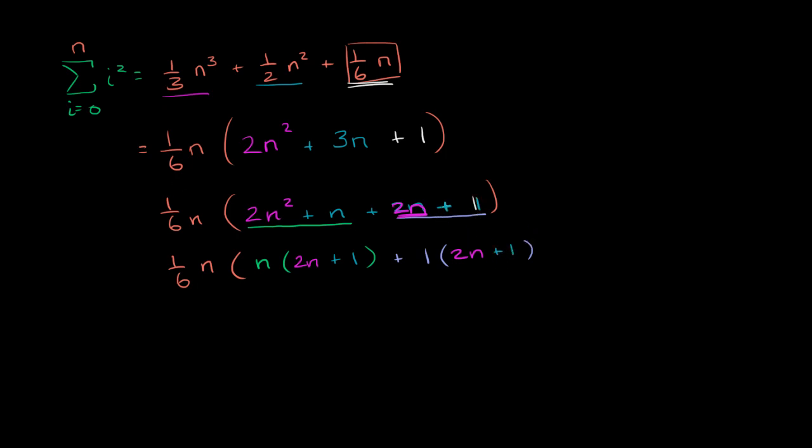And so now you can factor out a 2n plus 1. And this thing simplifies to one-sixth n times 2n plus 1. I'm just factoring out a 2n plus 1, and then you're going to have n plus... if you factor a 2n plus 1 out of each of these terms, you're going to have just an n and a 1. So one-sixth times n times 2n plus 1 times n plus 1. And if this was confusing, I encourage you to review the videos on factoring by grouping.